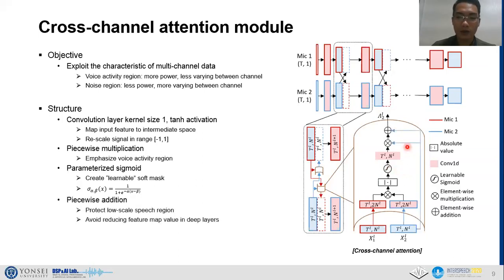Finally, the residual connection is applied by piecewise addition in order to protect low scale speech region if it was missed by the sigmoid activation and avoid feature map values repeatedly reduced in deeper layers.